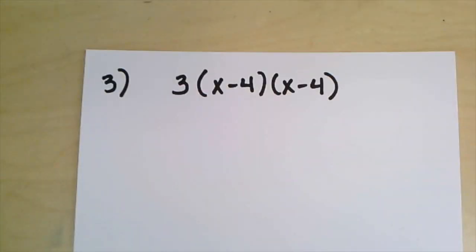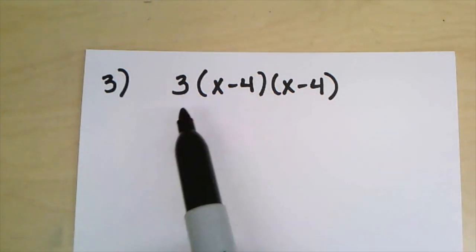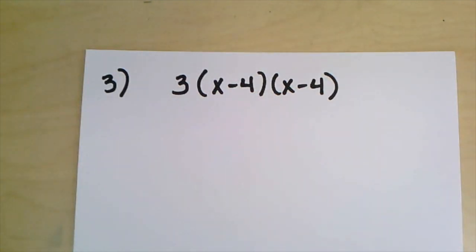Our last example here might look a little bit confusing as well because you now see the 2 binomials that we'll be multiplying together, but there's also a number out in front. You may be wondering what order do I need to multiply them.